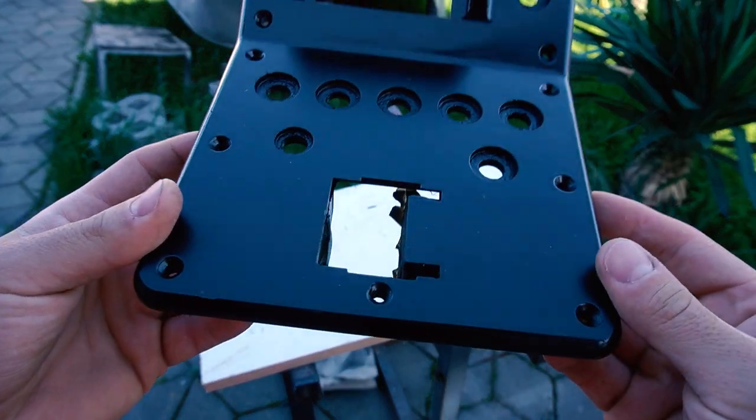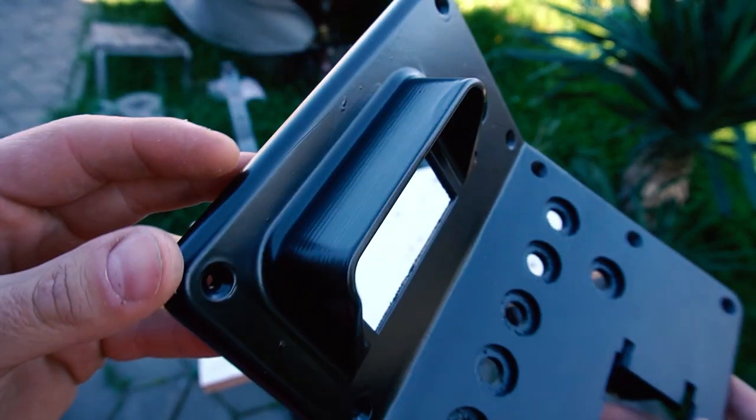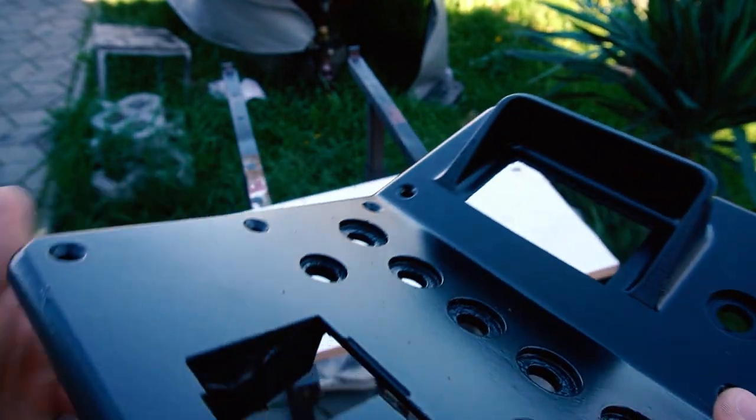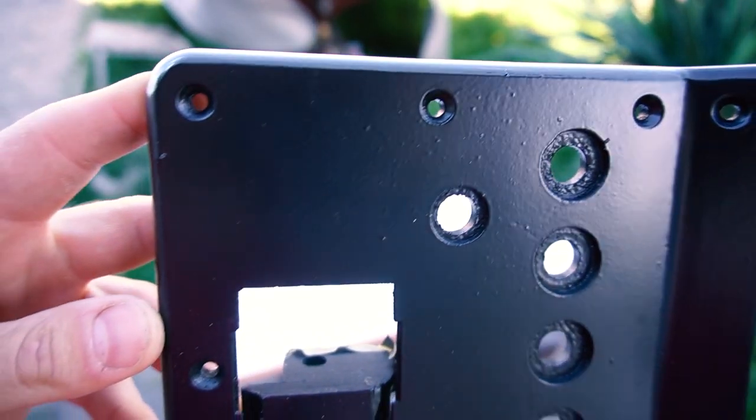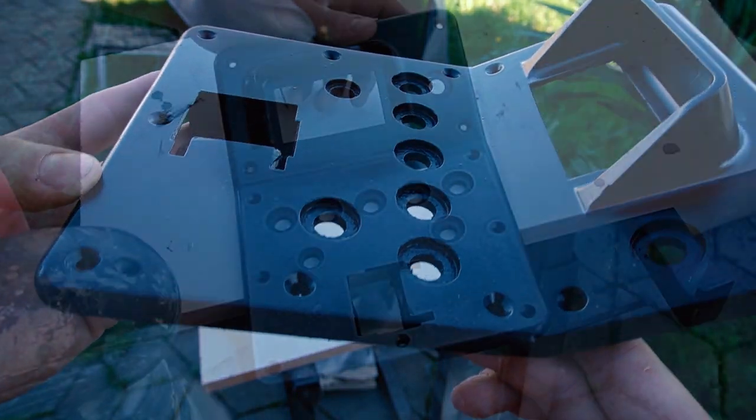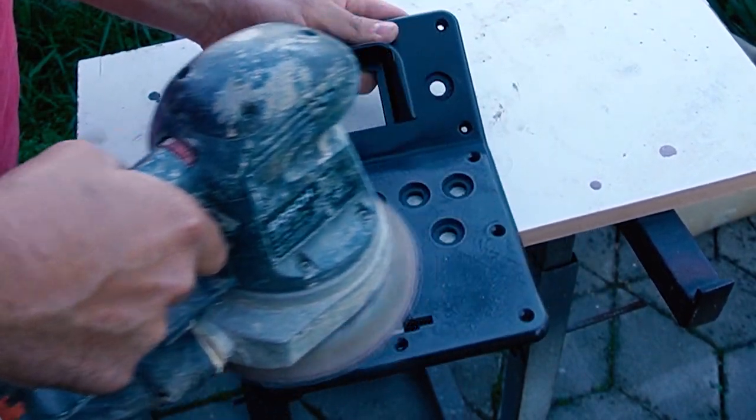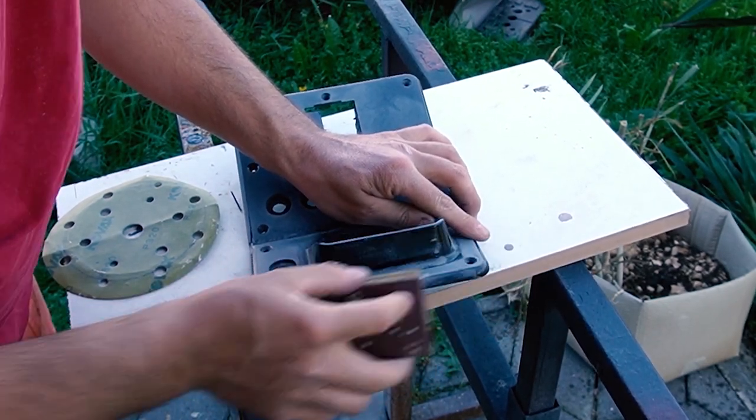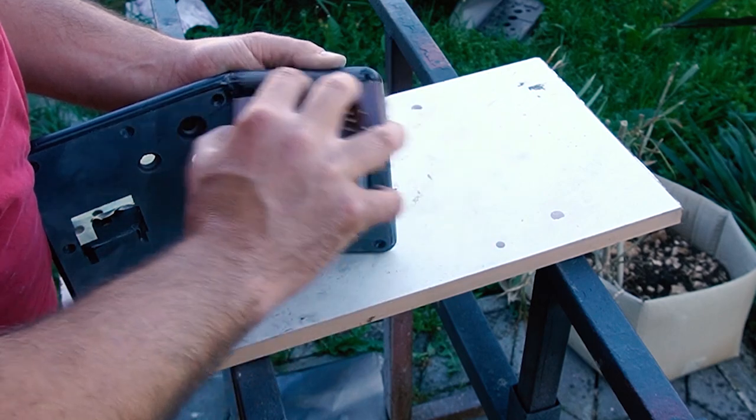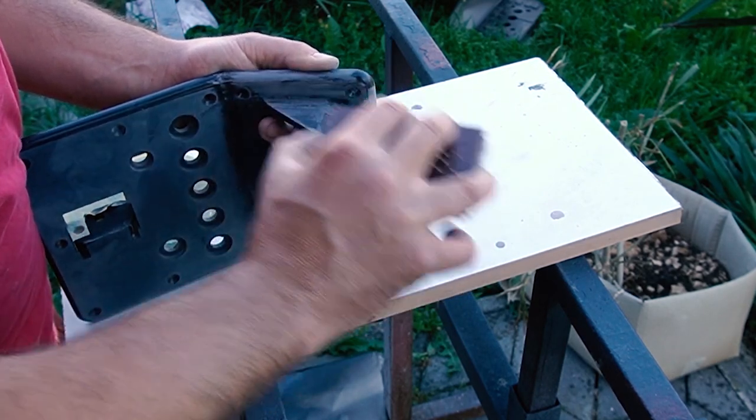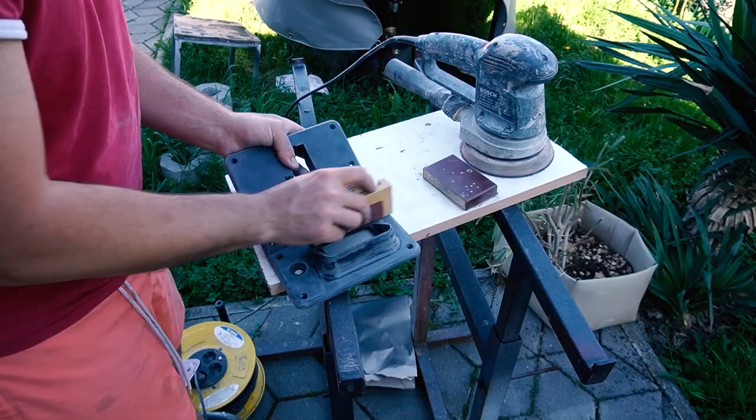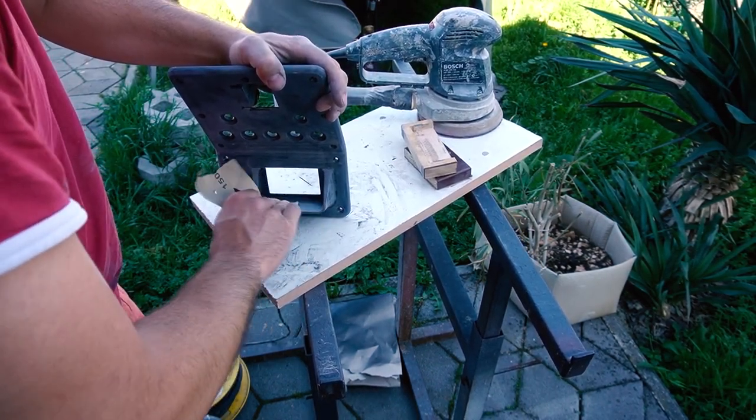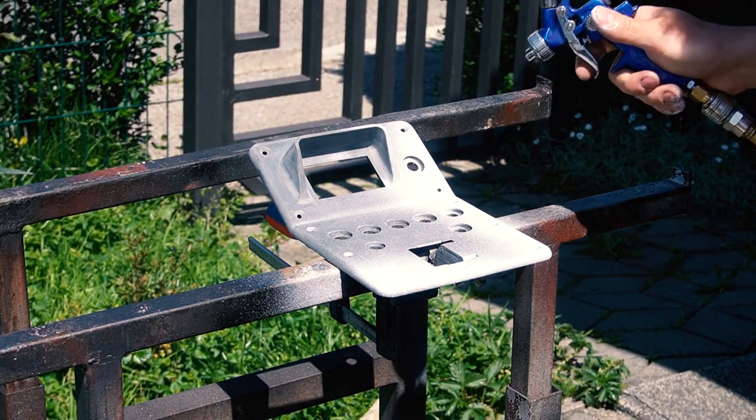The part is now ready for one final sanding. You can see all the imperfections that still need to be sanded out. And finally, the part is ready for spray painting.